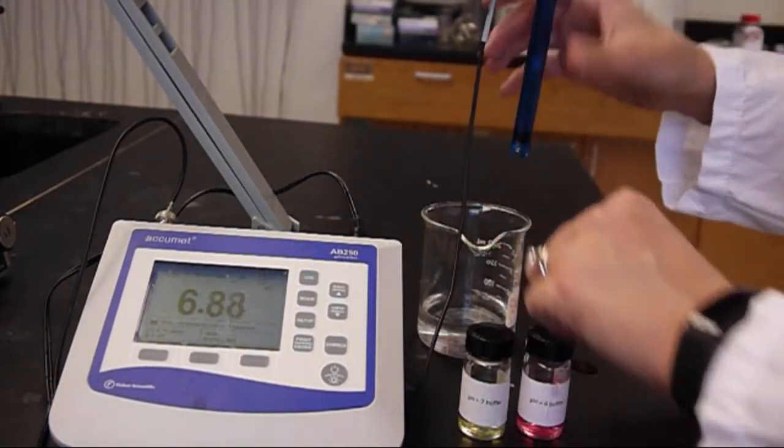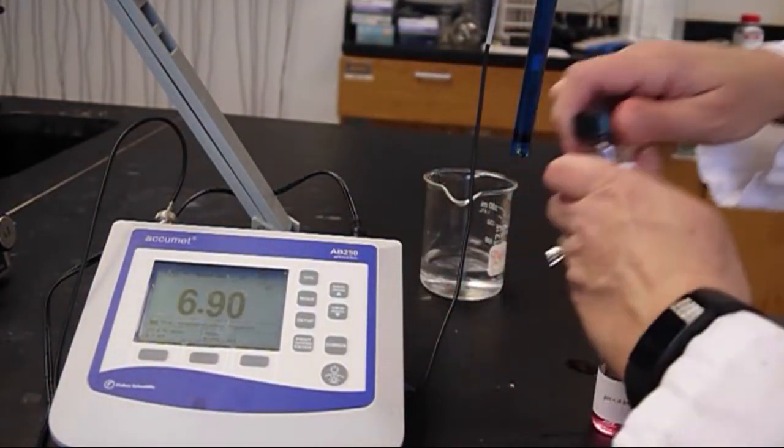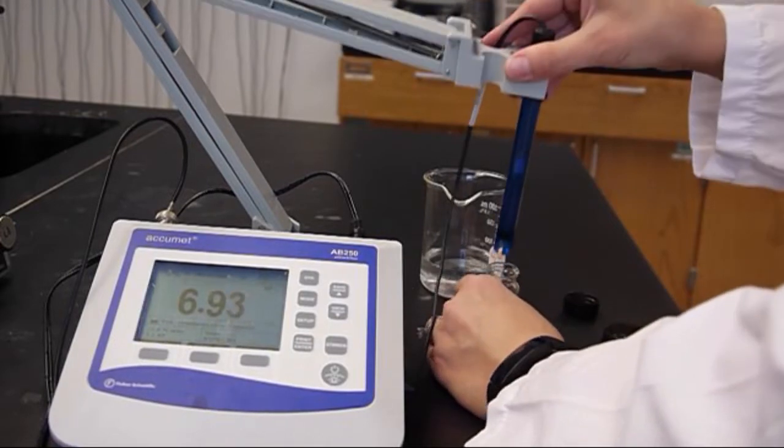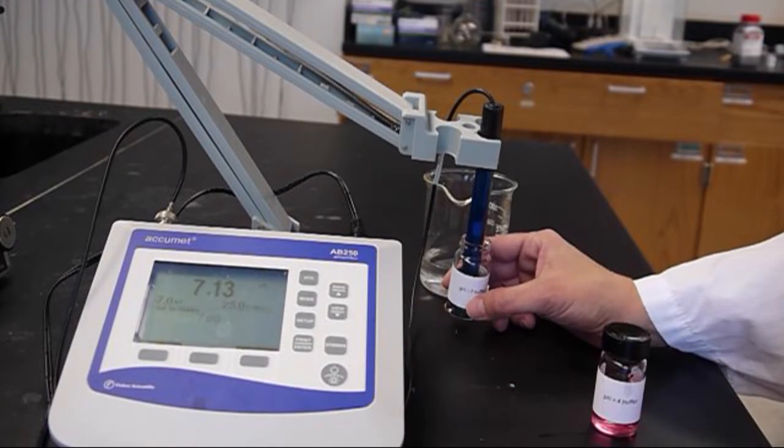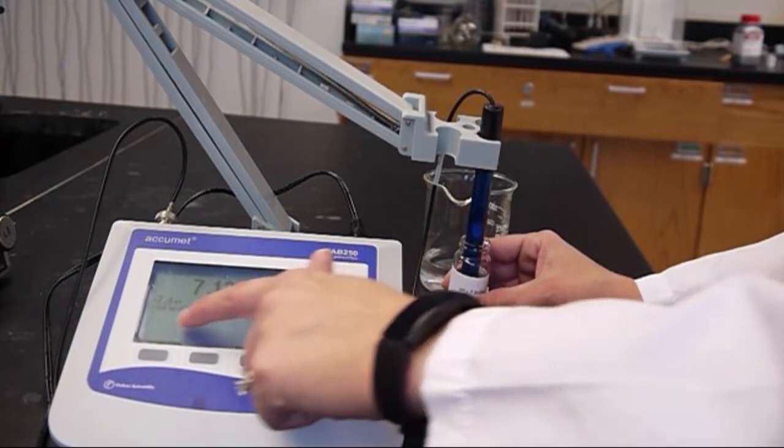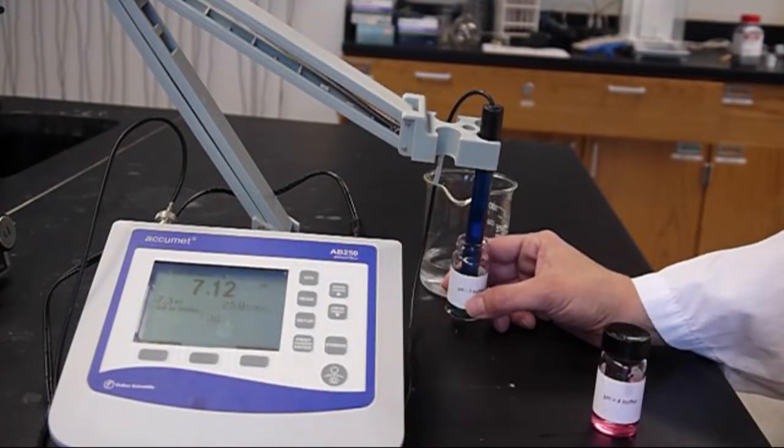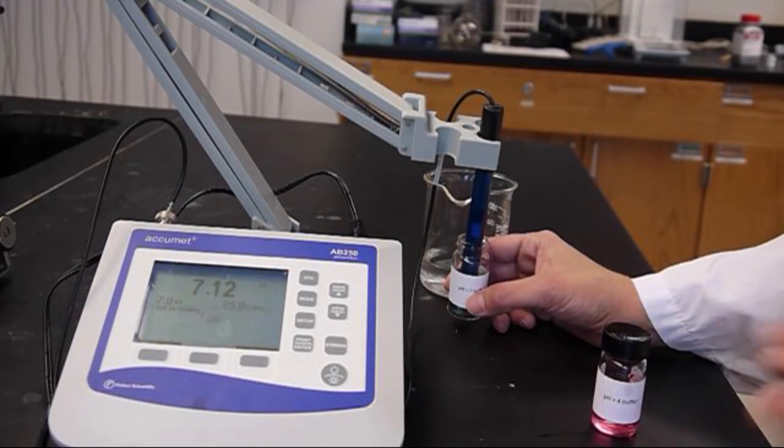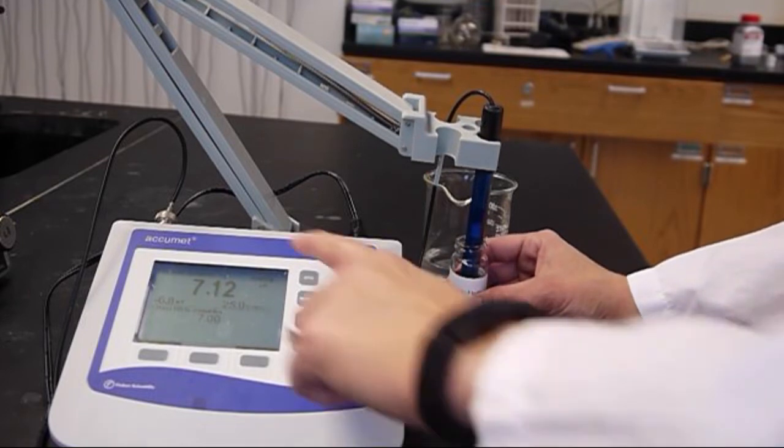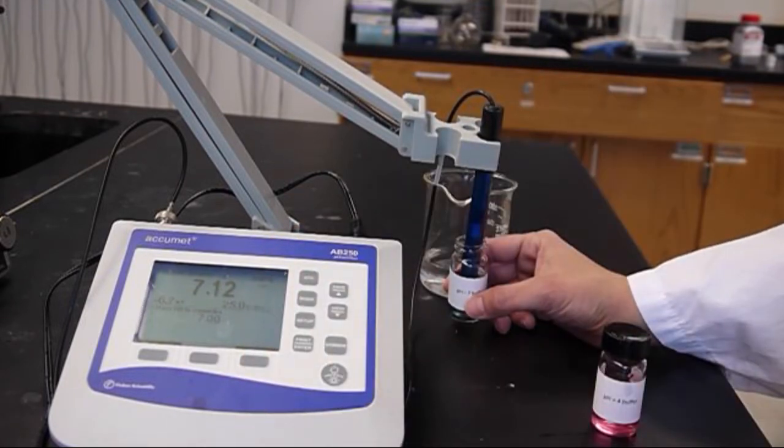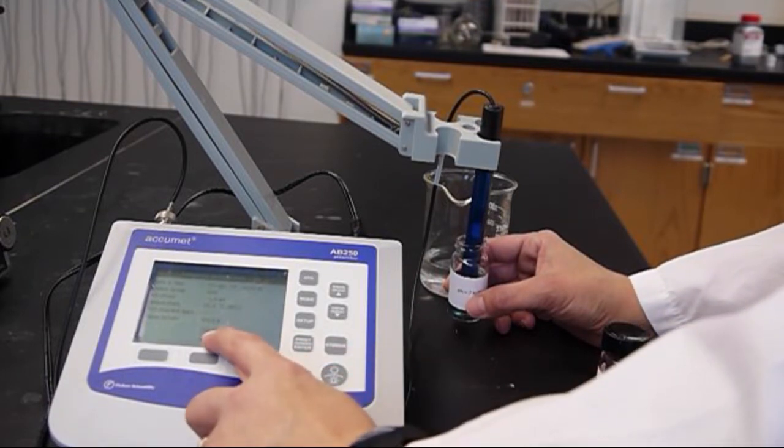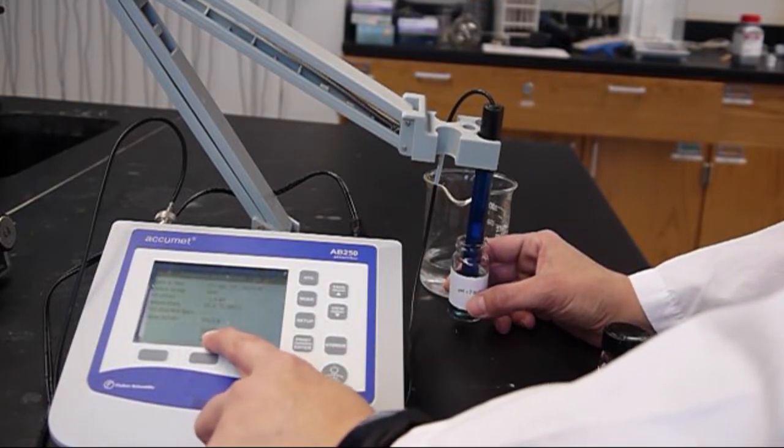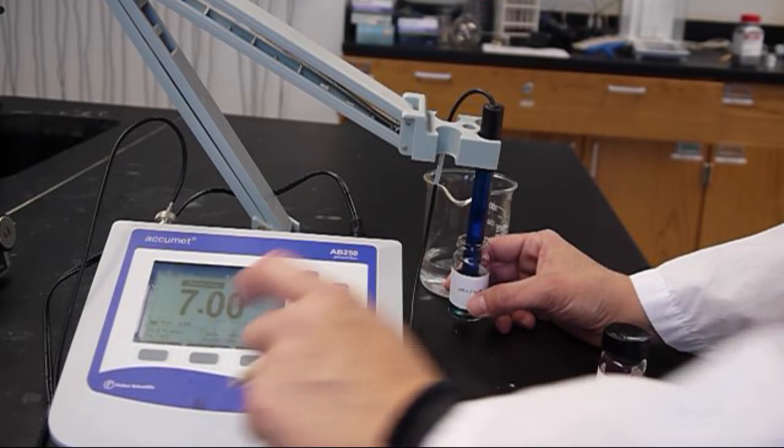So in order to calibrate let's first place our pH electrode in the pH 7 buffer and we'll press STD for standard. And right now it says it's waiting for stability. This pH meter will tell you when it has reached a stable measurement and at that point I see it says stable here. So now we can press STD to standardize and we'll have our pH 7 standard depicted there.